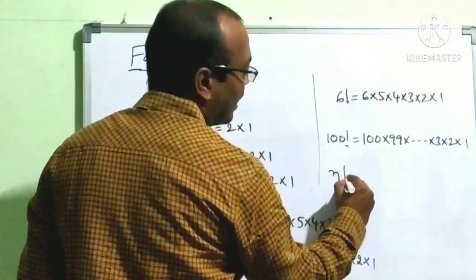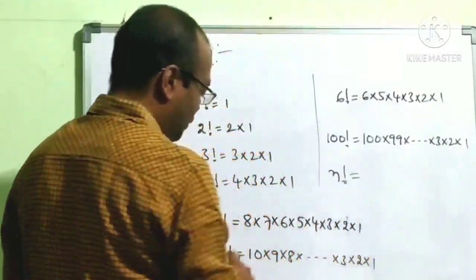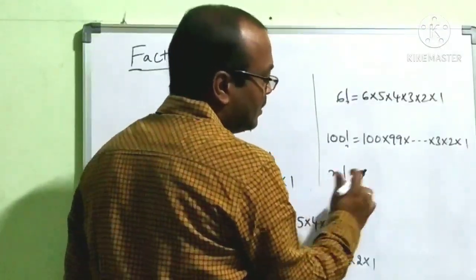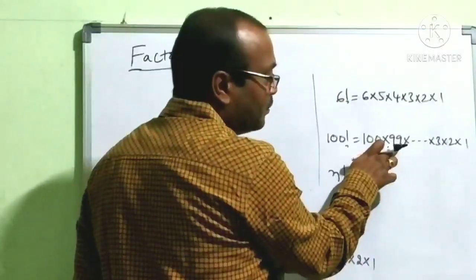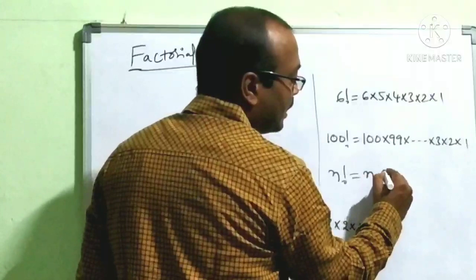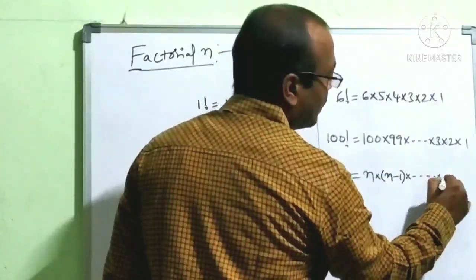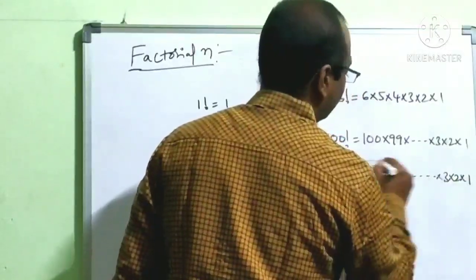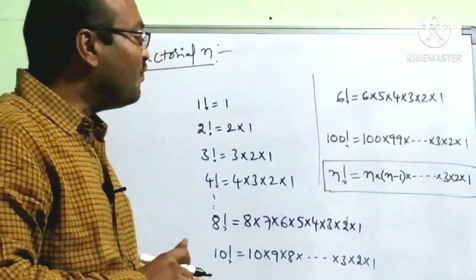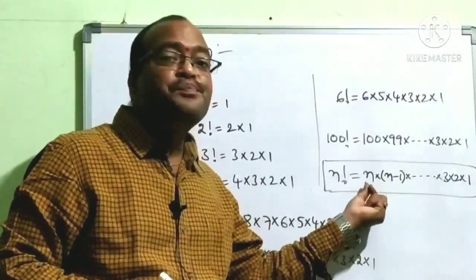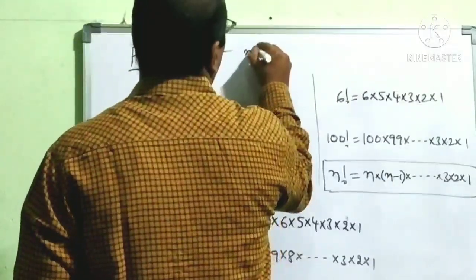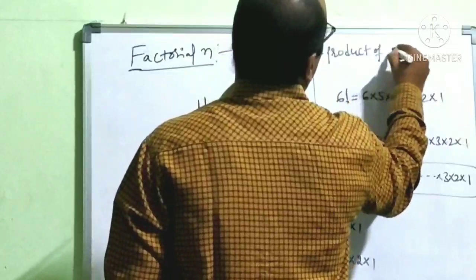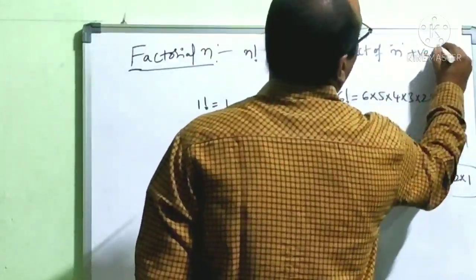So n factorial means what? According to the rule, n factorial starts with n, then n−1, and so on, ending with 3 × 2 × 1. N factorial is the product of n positive integers. This is the definition of n factorial.